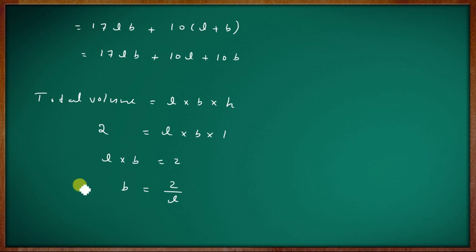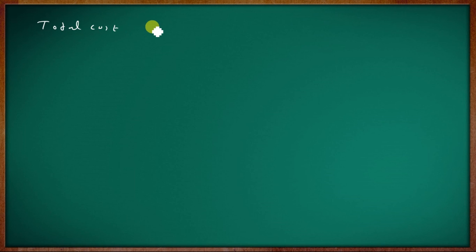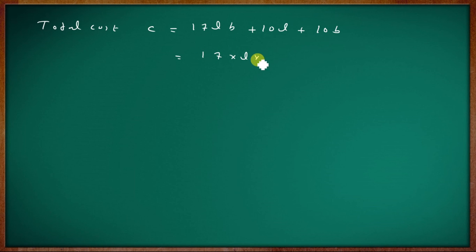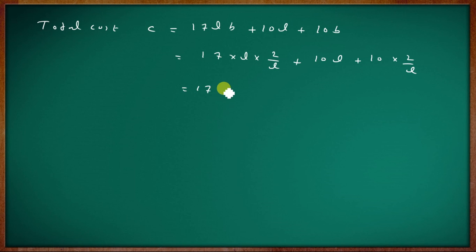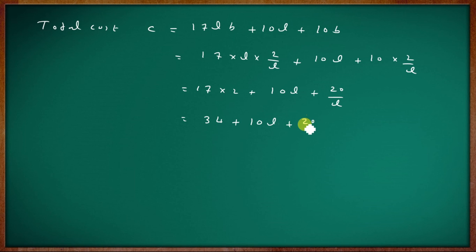Applying total cost: substituting B = 2/L into 17LB + 10L + 10B gives 17L(2/L) + 10L + 10(2/L) = 34 + 10L + 20/L. So f(L) = 34 + 10L + 20/L.